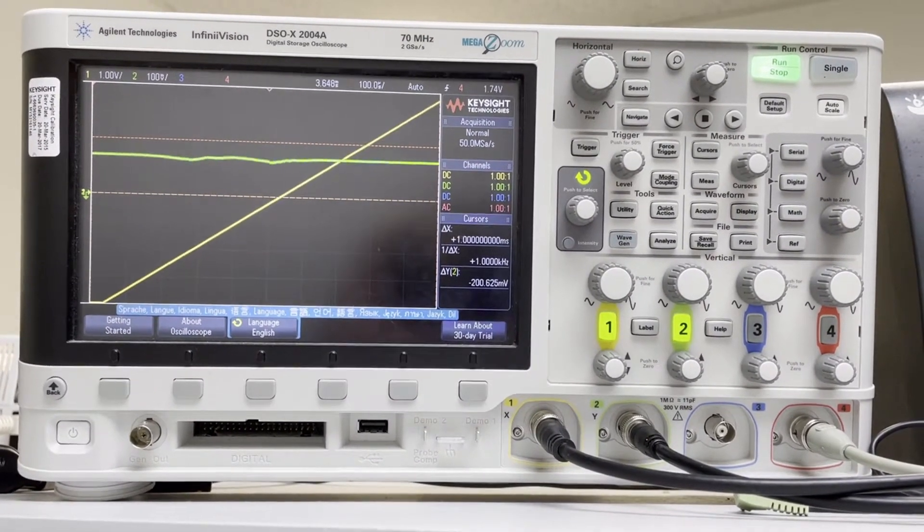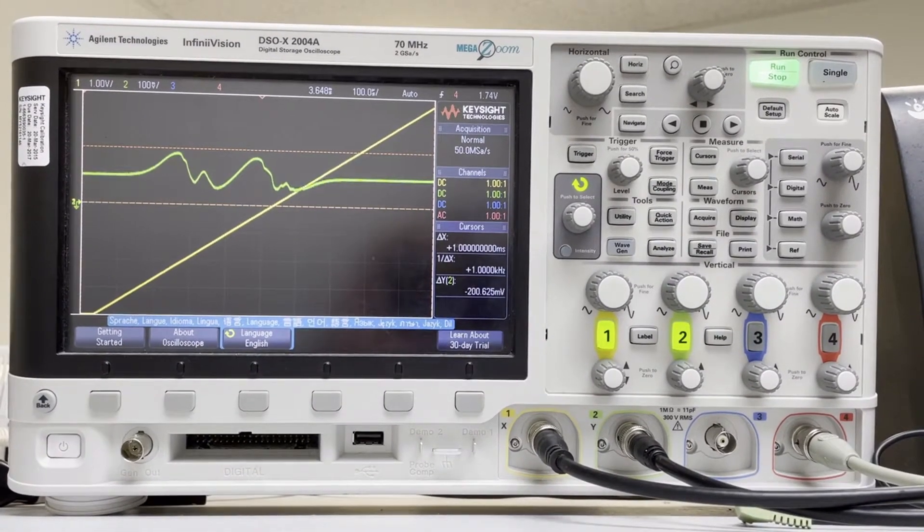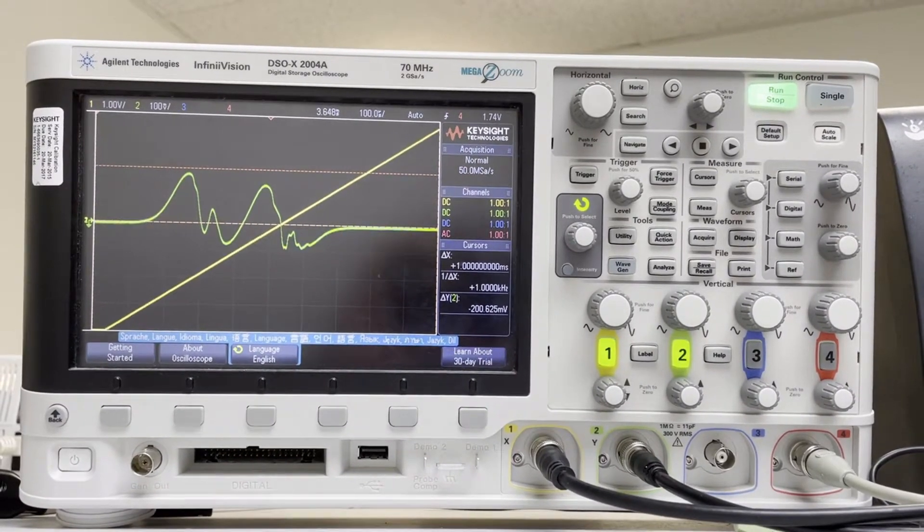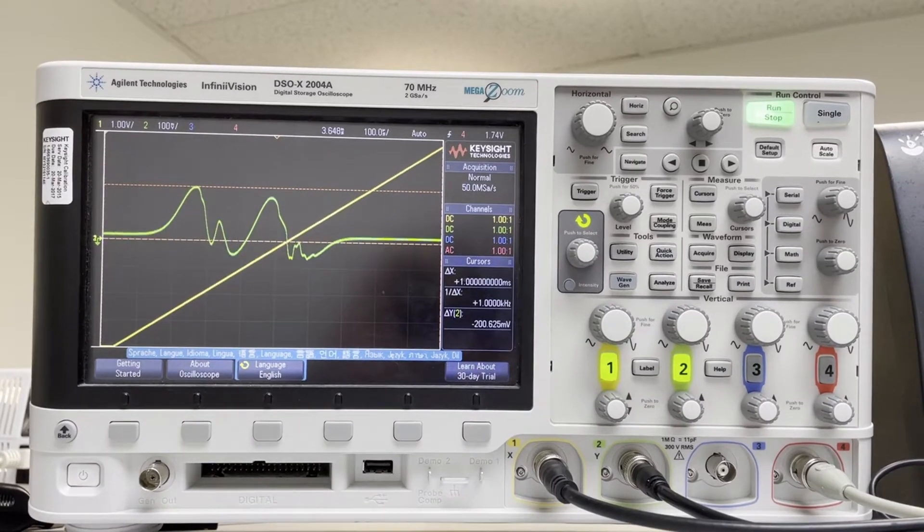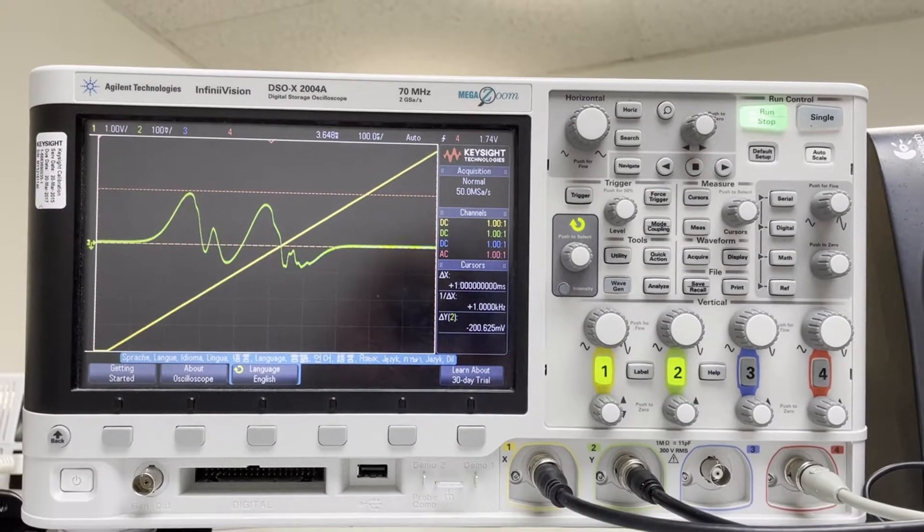The next thing we're going to do is turn the phase counterclockwise until we start to see these peaks, and what we want is for them to be as big as possible but to have not moved down yet. So I'm going to put it right about here. You can see that they've sort of maximized and they're just starting to move down as I turn it more clockwise.